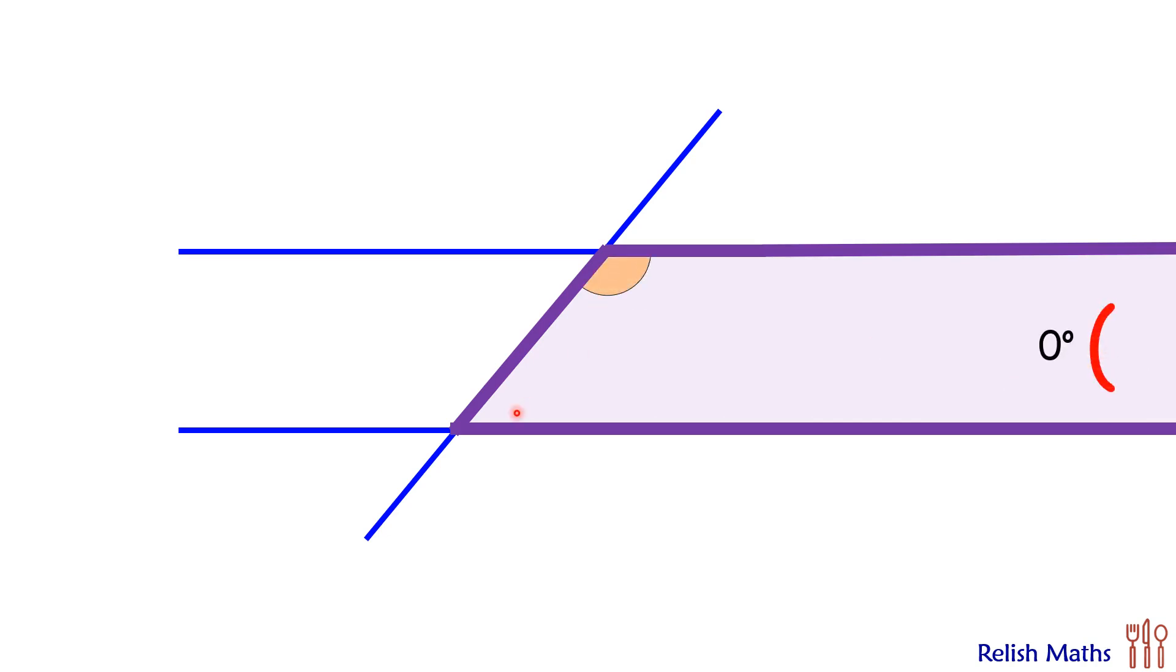And these angles, if we take as x degrees and y degrees, then together the sum of these three angles will be 180 degrees, or we'll get x plus y equals 180. And this is what we take as co-interior angles are supplementary.